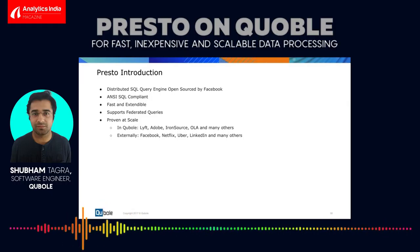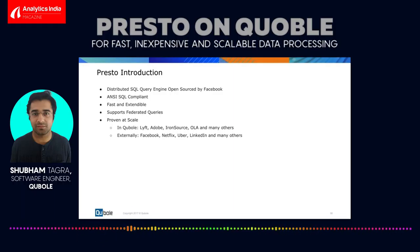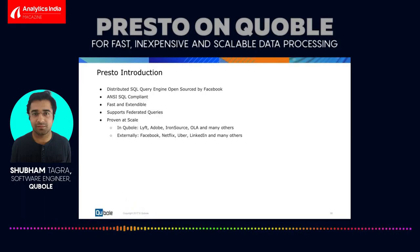Presto has proven itself at scale. At QBol we have large customers like Lyft, Adobe, Iron Source, and Ola, which have multiple Presto deployments — multiple clusters ranging from a few tens of nodes to hundreds of nodes. Even outside QBol, Presto has proven its worth at companies like Facebook, Netflix, Uber, and LinkedIn, which run multiple clusters with lots of nodes to provide interactive query solutions for their analysts.